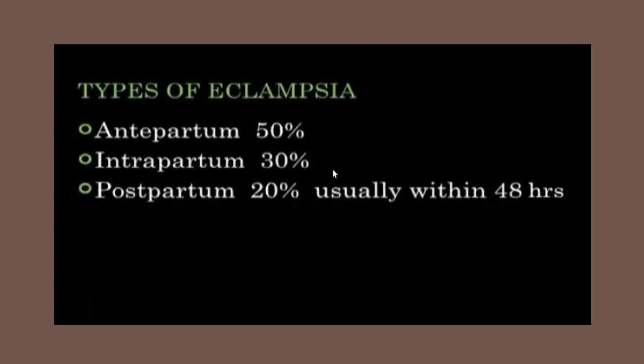We'll look at the types of eclampsia according to pregnancy duration, categorized into three. Around 50% of cases occur in the antepartum period, around 30% develop during the intrapartum period, and 20% are seen in the postpartum period, usually occurring within 48 hours.